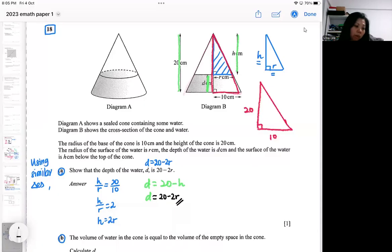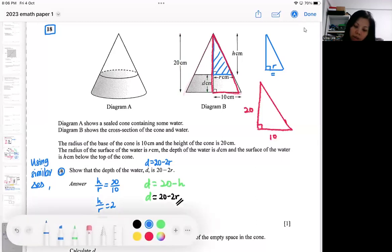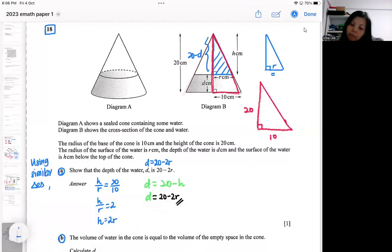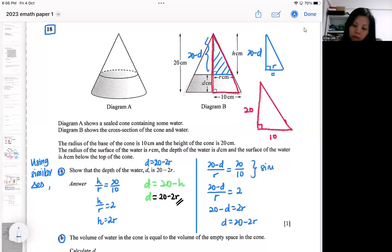Another way will be some students they never write it as h. Some students see it directly as this is 20 minus d. Yes, you can do it as well. If you see it directly as 20 minus d, then you can do the same thing. 20 minus d over r is equal to 20 over 10. You will still get the same answer. Because you will get a 2. If you cross multiply, you get 2r. If you make d the subject, you still get this. So this is also done by similar triangles. So both ways will be acceptable.